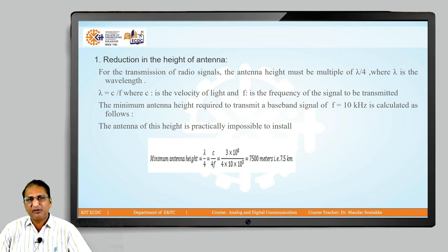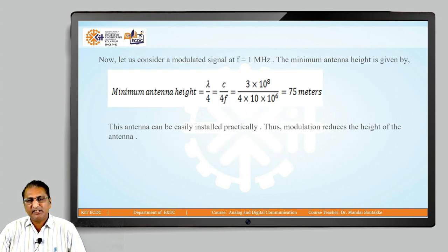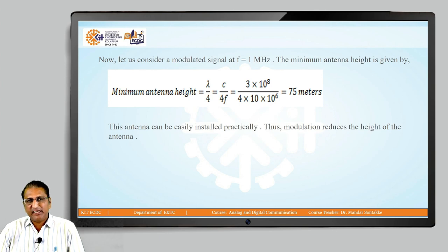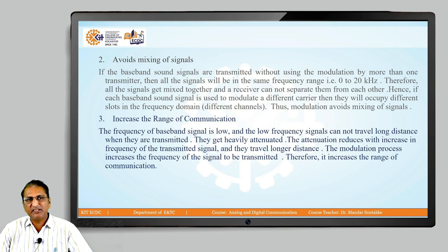When frequency is increased to 10 MHz, the antenna height becomes c/(4f) = 3×10⁸ / (4×10×10⁶) = 75 meters, which is practically achievable. So when frequency is higher, the required antenna height is much less. This is the first reason modulation is needed — it reduces the required antenna height to a practical size.